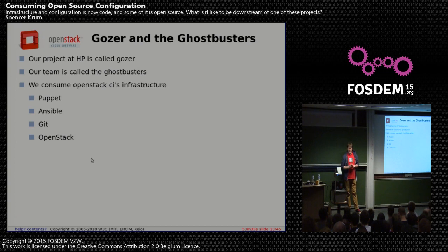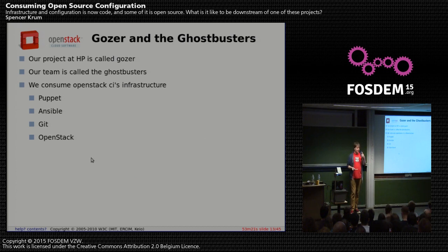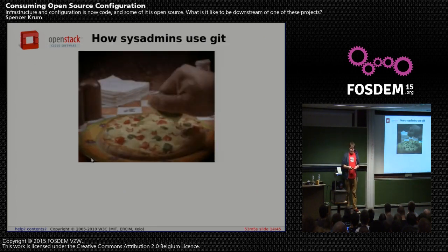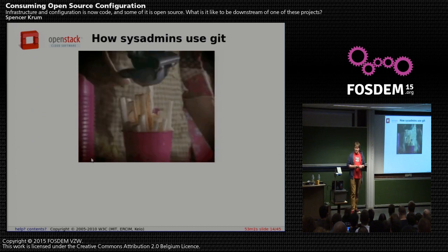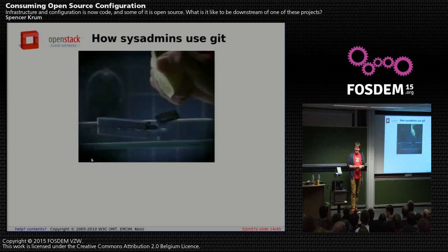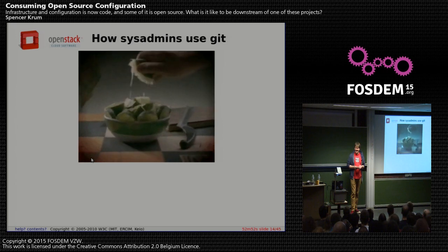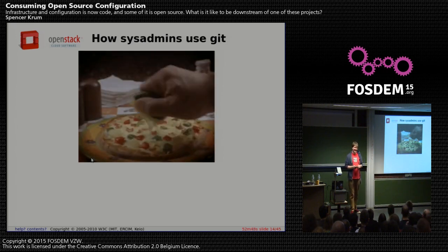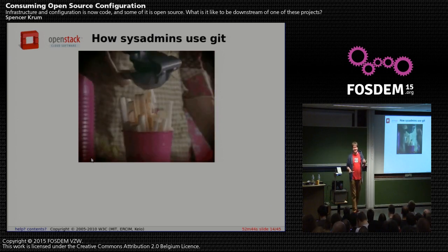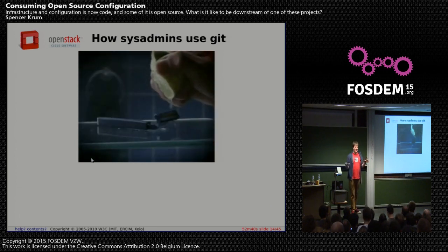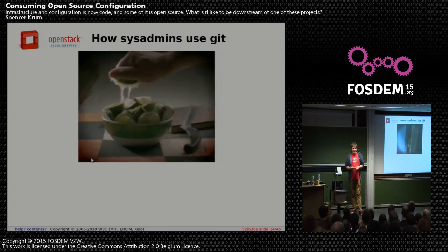Our team at HP is called the Ghostbusters, and our project is called Gozer. We consume the OpenStack CI infrastructure. They use Puppet for configuration management, Ansible for orchestration, Git for version control, and run all their infrastructure on OpenStack — split between a Rackspace cloud and HP Cloud. And putting Git on everything means everything is shareable, which is really cool.